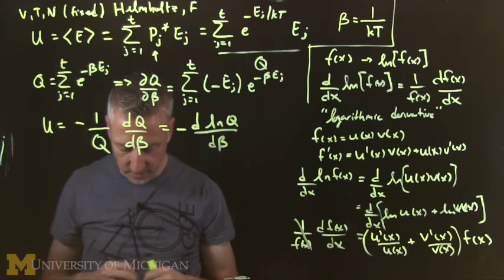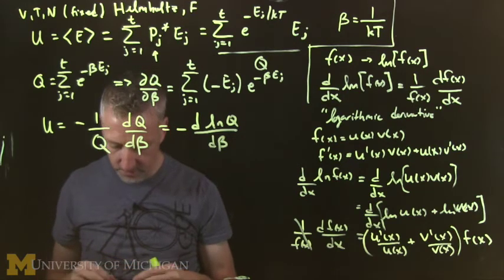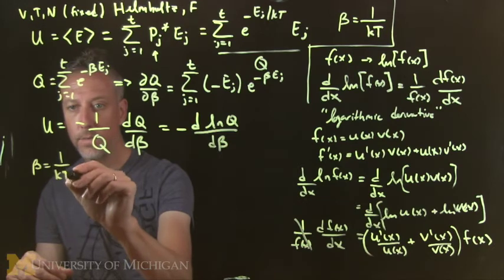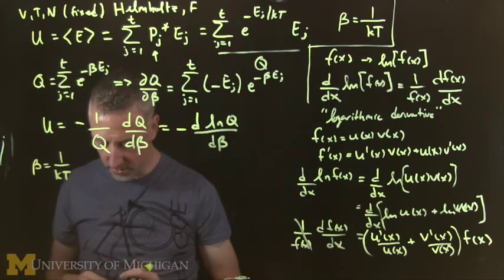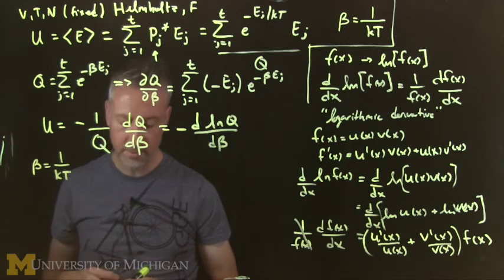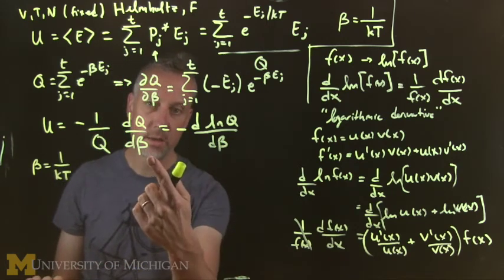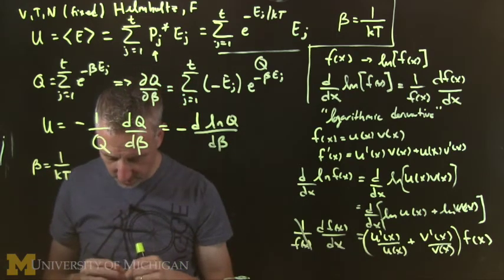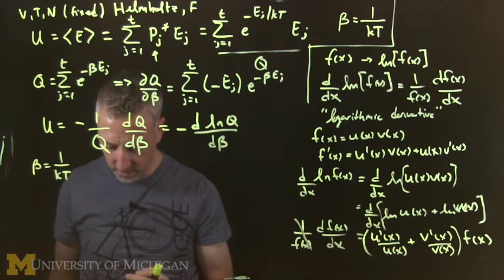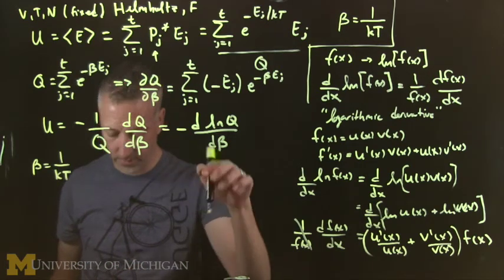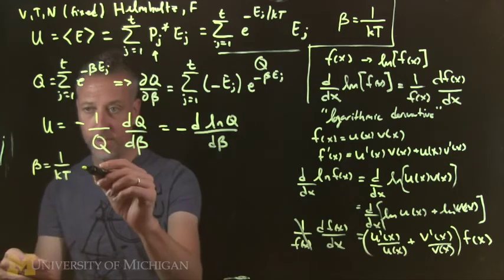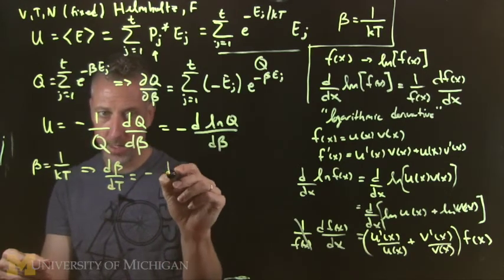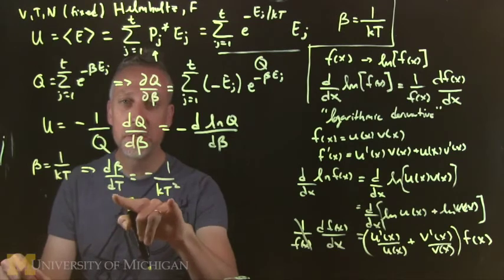And so some other things that we can do that turn out to be very practical is to look at beta itself. Remember beta is 1 over kT. So what we might want to do is look at the temperature derivative of beta. Why might we want to do this? We might want to switch this derivative to being in terms of temperature instead of in terms of beta. We need to figure out what's the factor to do that.